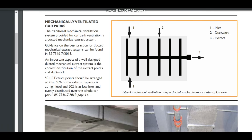Guidance on best practice for ducted mechanical exhaust systems can be found in British Standard BS 7346:2013. Under clause 8.1.5, it states that extract points should be arranged so that 50% of the exhaust capacity is at a high level and 50% is at a low level, evenly distributed over the entire car park.